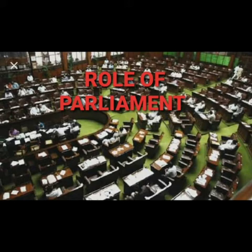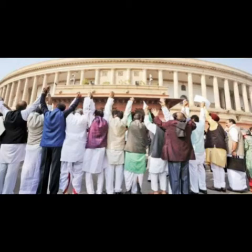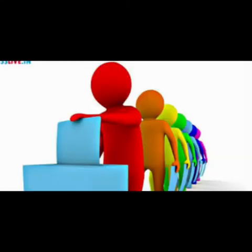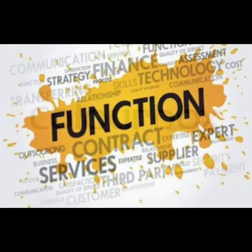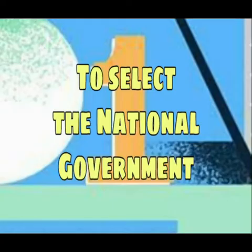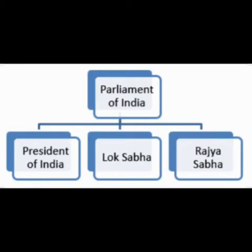Once elected, the candidates who become the members of parliament all together form up the parliament. Once elections to the parliament take place, the parliament needs to perform the following functions. The very first one is to select the national government. The parliament of India consists of the President, the Rajya Sabha, and the Lok Sabha.